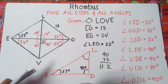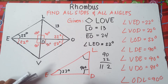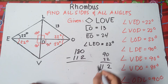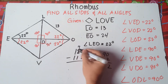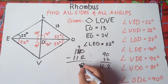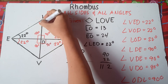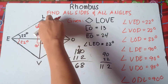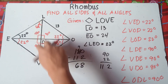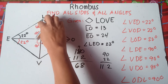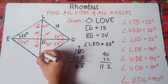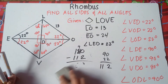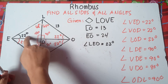We subtract that from 180: 180 minus 112 equals 68 degrees. So therefore, this angle must be 68 degrees. If this is 68, this must also be 68, because diagonal LV cuts the opposite angles L and V into half. So this is also 68 degrees, and if we add them — 68 plus 22 plus 90 — it equals 180. That checks out.